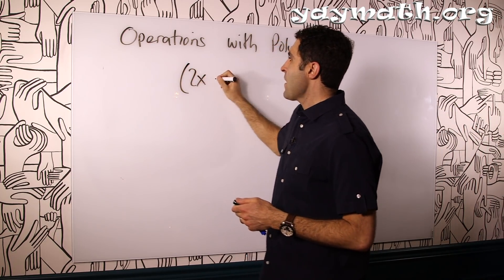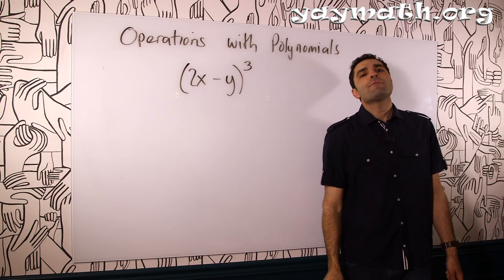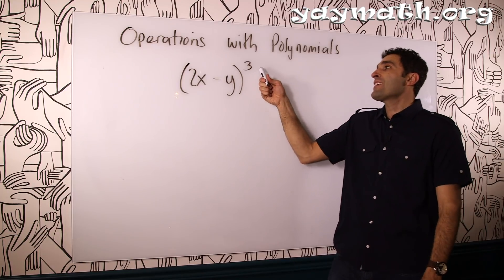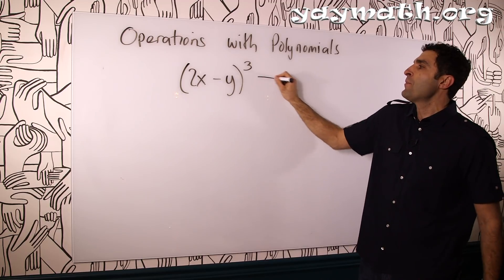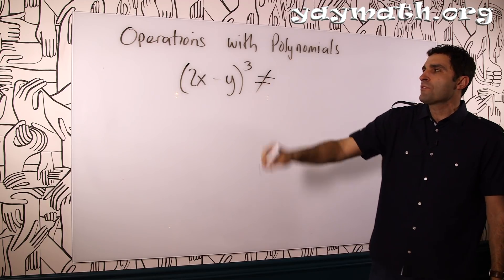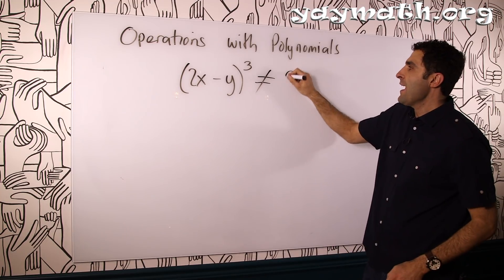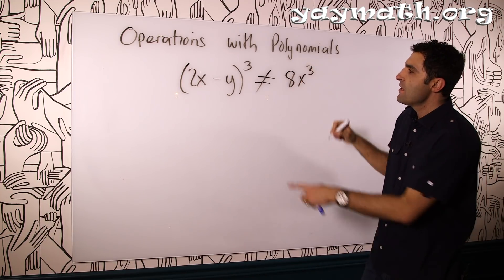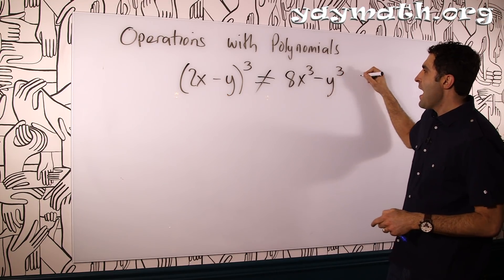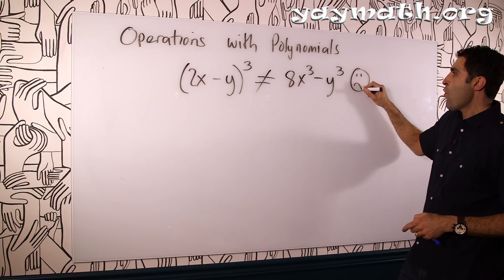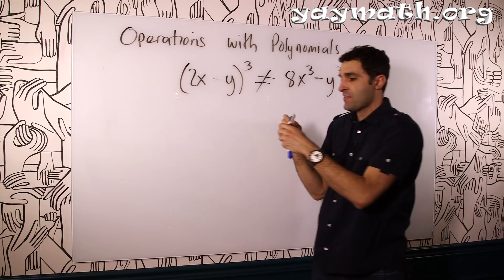So, 2x minus y cubed. Oh, the temptation to just bring in the cube to 2x and negative y. People love it. I'm going to put a big fat not equal to here. People think it's 2x times 2x times 2x, which would be 8x cubed, negative y times negative y times negative y would be minus y cubed. Doesn't work that way. We have to multiply these binomials together.